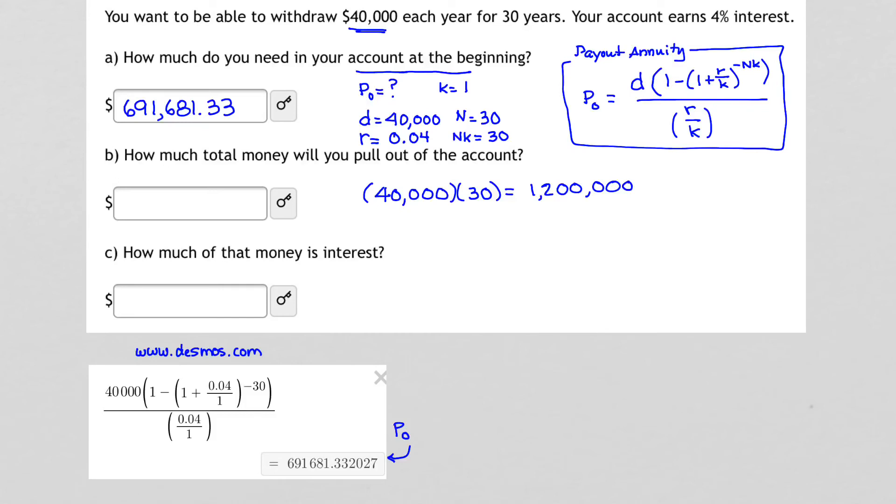There we go. One million, $1,200,000. That's the amount I get by taking 40,000 times 30. And that's how much money I'm going to be able to pull out from my account over the course of the 30 years. That finishes part two.